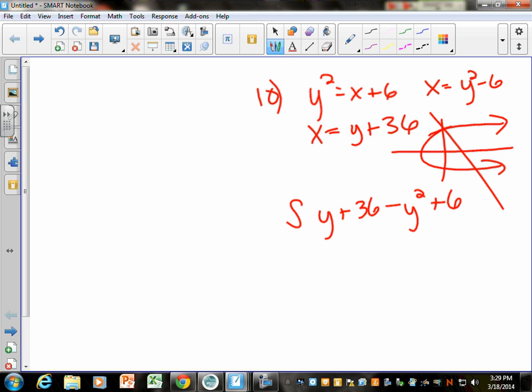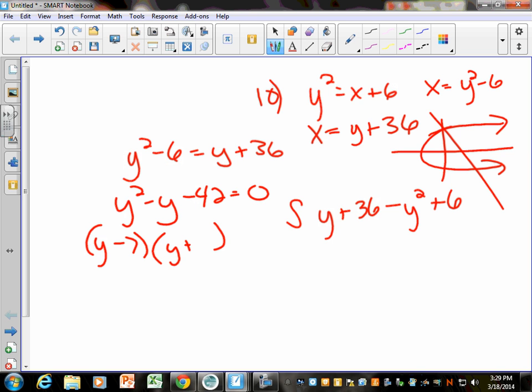The other thing that we need here is our bounds. And again, if you graph it, you can find the bounds. But remember, you can also just set them equal to each other. So you could say y squared minus 6 equals y plus 36. So if you subtract y over and you subtract 36 over, you can factor that into y minus 7, y plus 6. So you get y equals 7 and y equals negative 6.